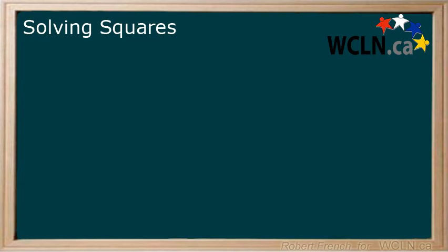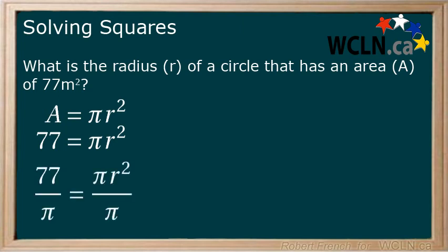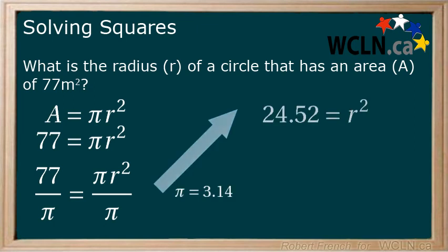Let's look at one more example. What is the radius of a circle that has an area of 77 meters squared? Answer should be to two decimal places. Start with a formula of a equals pi r squared. Now put in 77 for a. Remember, we are trying to isolate r, so we divide both sides by pi. For this question, we will use 3.14 for pi. We are now left with r squared equals 24.52.